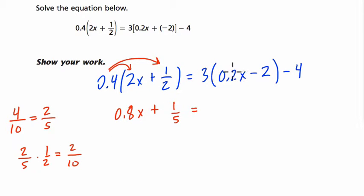Equals. 3 times 2 is 6, so 3 times 0.2 is 0.6x. And then 3 times negative 2 is minus 6, and we're supposed to be subtracting 4. Next I'm going to simplify. Minus 6 minus 4 is minus 10. So you have 0.6x minus 10.